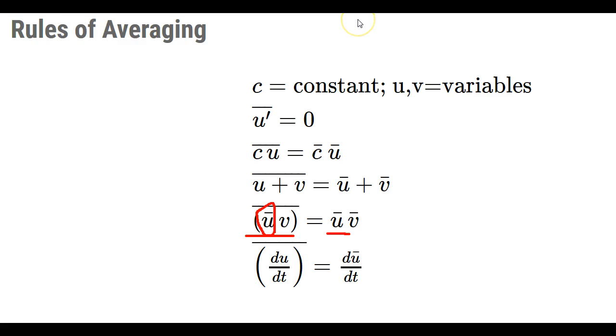Be careful. We will soon see that the average of the product of two variables is not just the product of the average of two variables. Finally, the average of the derivative of a variable is just the derivative of the average of the variable.